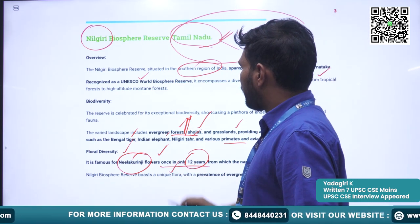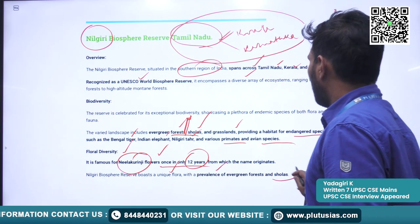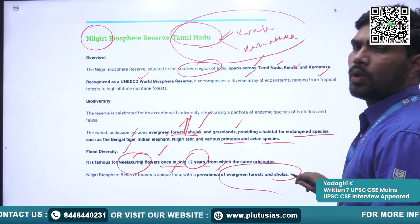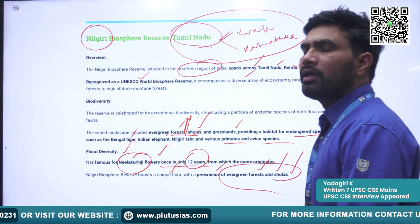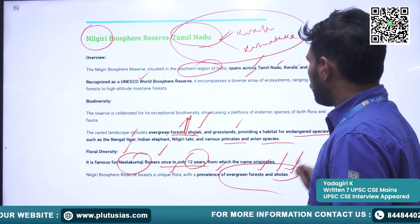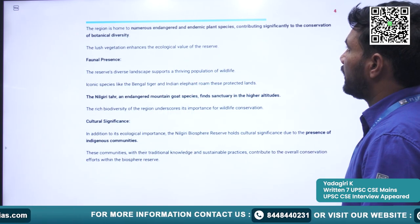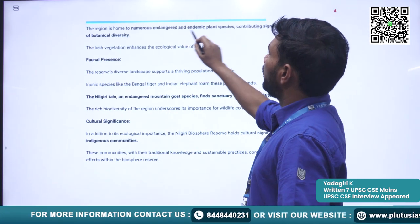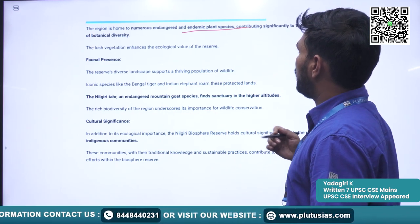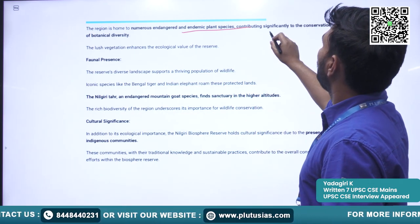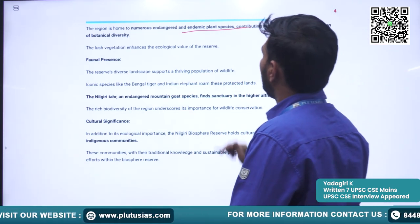The Nilgiri hills are famous for both evergreen forests and shola forests. The Biosphere Reserve is also home to numerous endangered and endemic species of plants, contributing significantly to the conservation of botanical diversity.